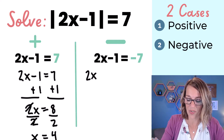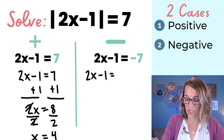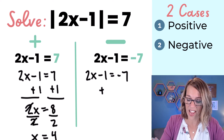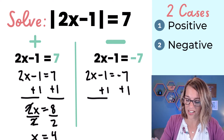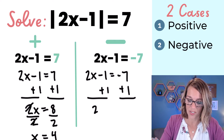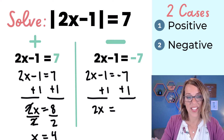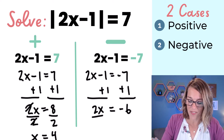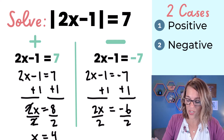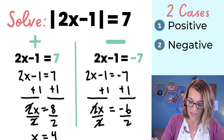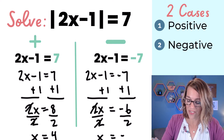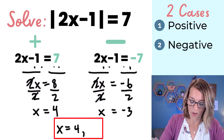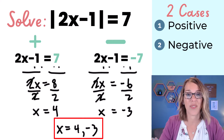For the negative case, 2x minus 1 equals negative 7. The steps are exactly the same. Adding 1 to both sides gives 2x equals negative 6. Dividing both sides by 2 gives x equals negative 3. So my two solutions are x equals 4 or x equals negative 3.